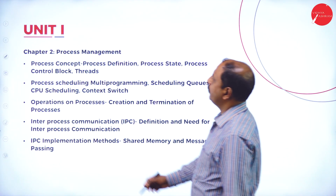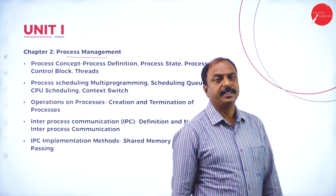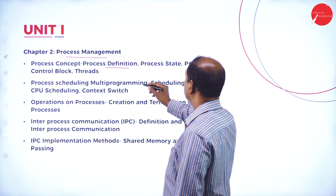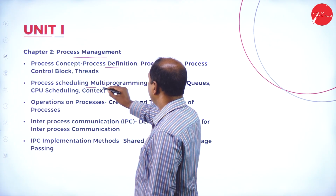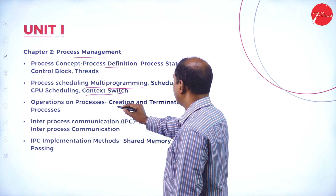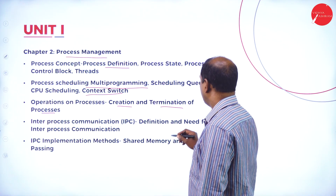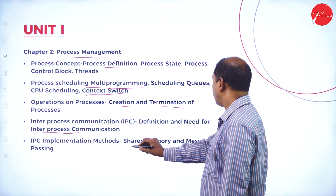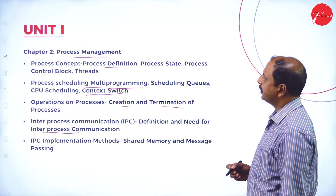Chapter 2 covers process management in depth. Any program in execution is nothing but a process — that is the basic definition. Topics include the definition of a process, process states, process control blocks, threads, process scheduling, multi-programming, scheduling queues, context switch, and operations on processes such as creation and termination. Also covered is inter-process communication (IPC): its definition, need, and implementation using shared memory and message passing.